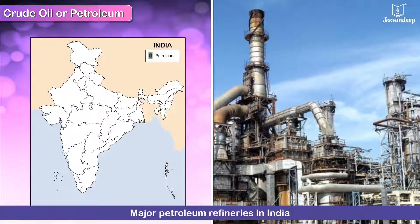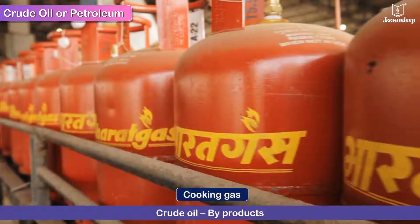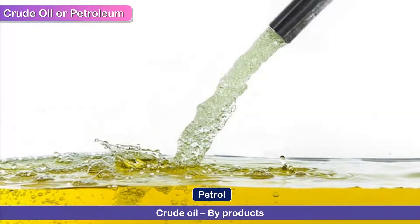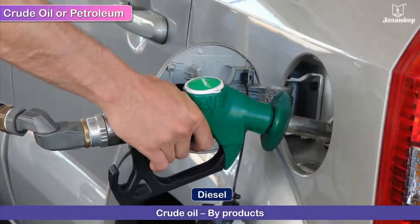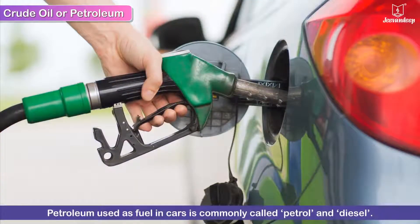The extracted crude oil is then refined — that is, impurities are removed from it — in refineries. In India, we have refineries in Mumbai, Chennai, Kochi, Mangalore, and Goa where crude oil is refined to obtain petroleum and petroleum products. Cooking gas, kerosene, petrol, and diesel are some by-products of crude oil. Petroleum used as fuel in cars is commonly called petrol and diesel.